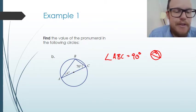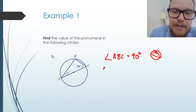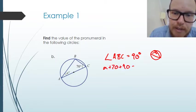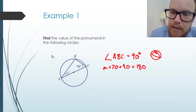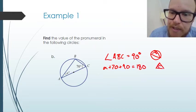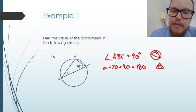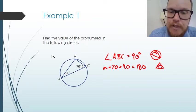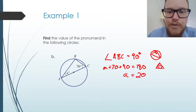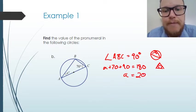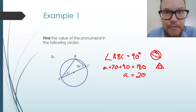This also means that because there are 180 degrees in a triangle, A plus 70 plus 90 equals 180. We need a coded reason for that too — the interior angles of a triangle sum to 180 degrees. Working this out, A is equal to 20.